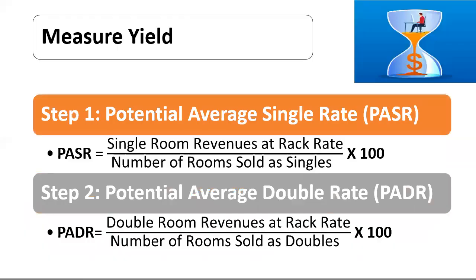Now let's measure yield. The yield statistic is the ratio of actual revenue generated to the potential revenue. The hotel may calculate potential revenue on the basis of two assumptions. First method: when it is presumed that all rooms of the hotel are sold on double occupancy and at the rack rate, the total revenue so generated shall be called potential revenue. However, it is a hypothetical case that all rooms are sold at rack rate and on double occupancy.